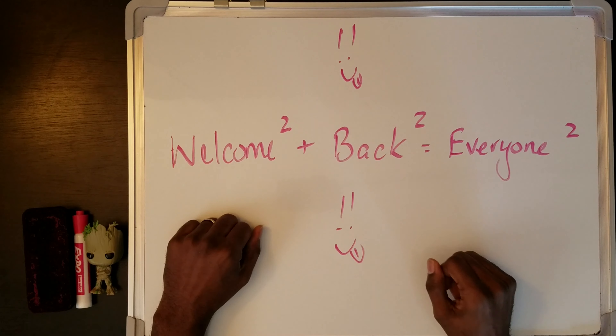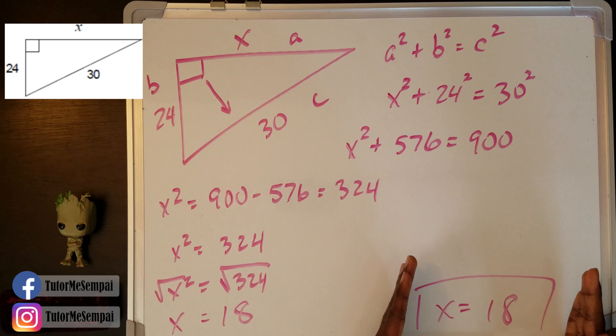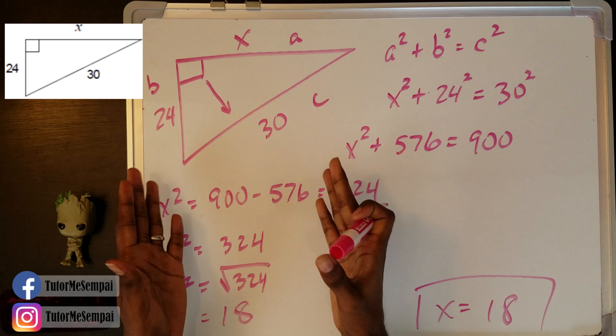Now that we know our answer is 18, we can do a quick mental check to make sure things make sense. Looking at the actual triangle, the leg appears much shorter than the other side in the drawing, but don't worry — we don't care about the drawing size, only the drawing position. We found a leg, so our leg can't be bigger in value than the hypotenuse they gave us. In this case it's not — 18 is less than 30. So we know this triangle still makes sense. However, if the answer had been something like 31 or more, that would show us we did something horribly wrong. Our leg can't be more than the hypotenuse.